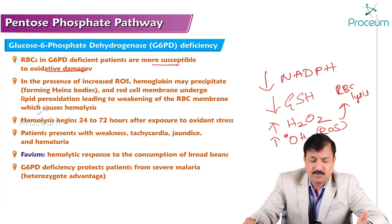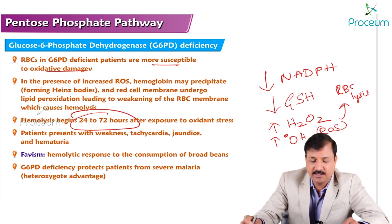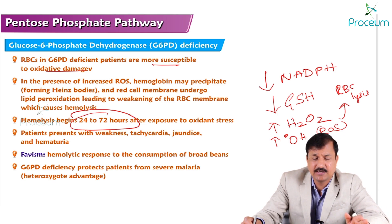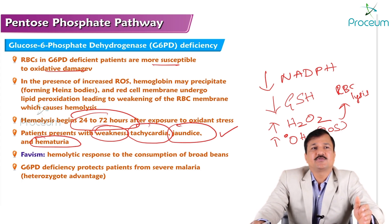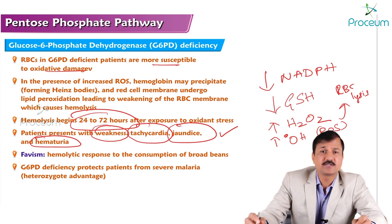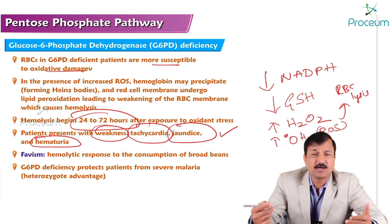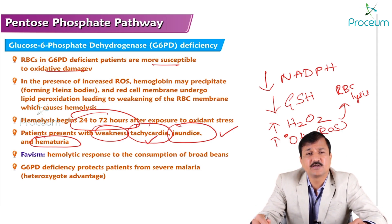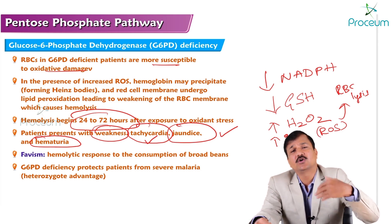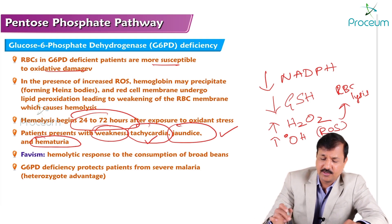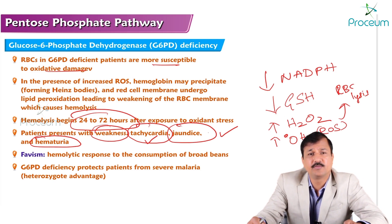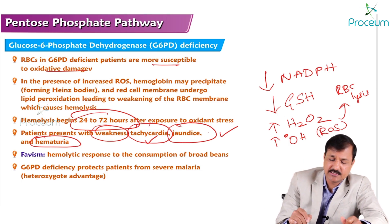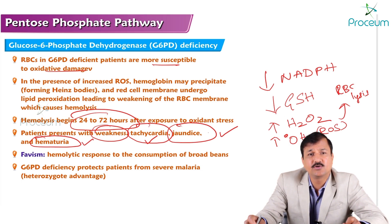It leads to severe hemolytic anemia. The hemolysis begins 24 to 72 hours after exposure to oxidative stress or any triggering event. Patients manifest with weakness due to decreased oxygen-carrying capacity, tachycardia due to decreased hemoglobin, and jaundice because heme is broken down into bilirubin. There is also presence of hemoglobin in the urine, leading to hematuria.